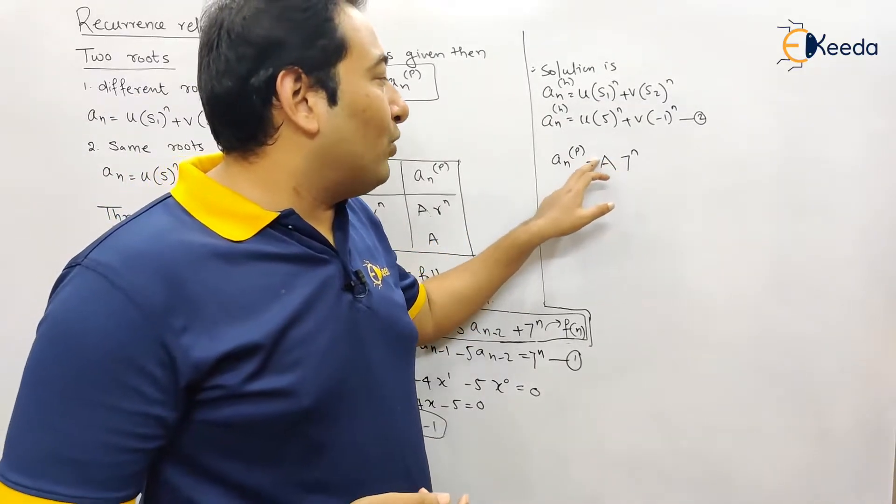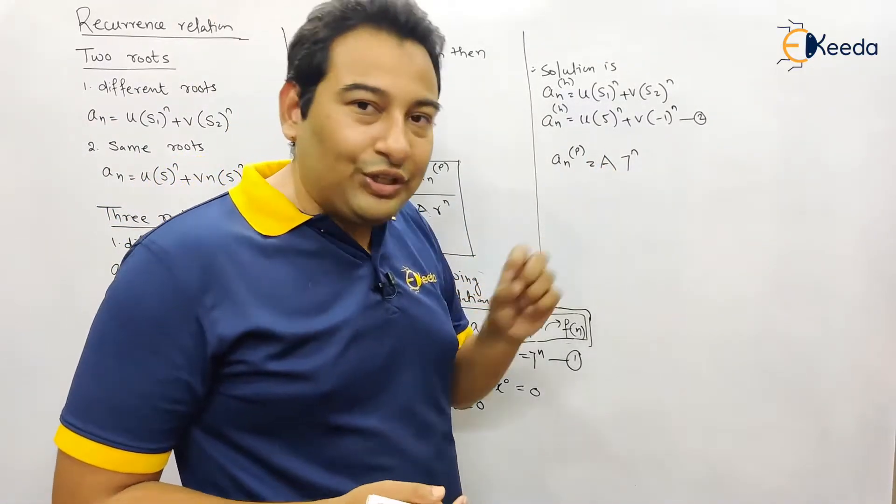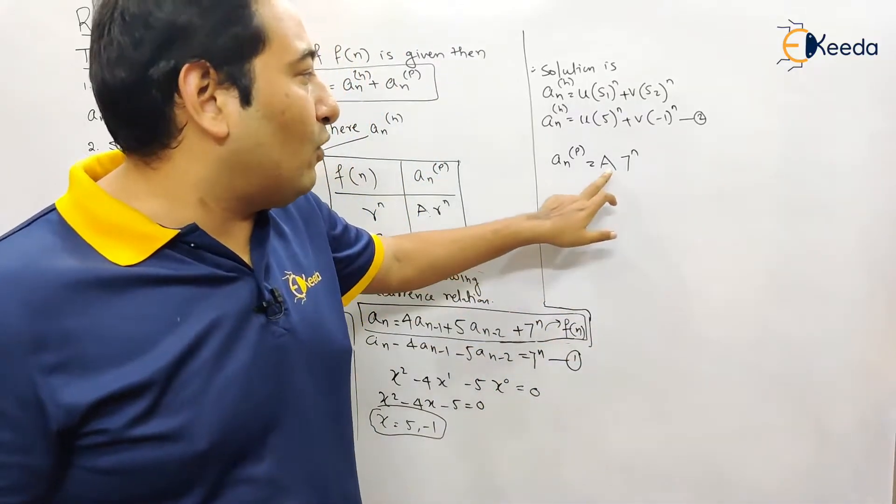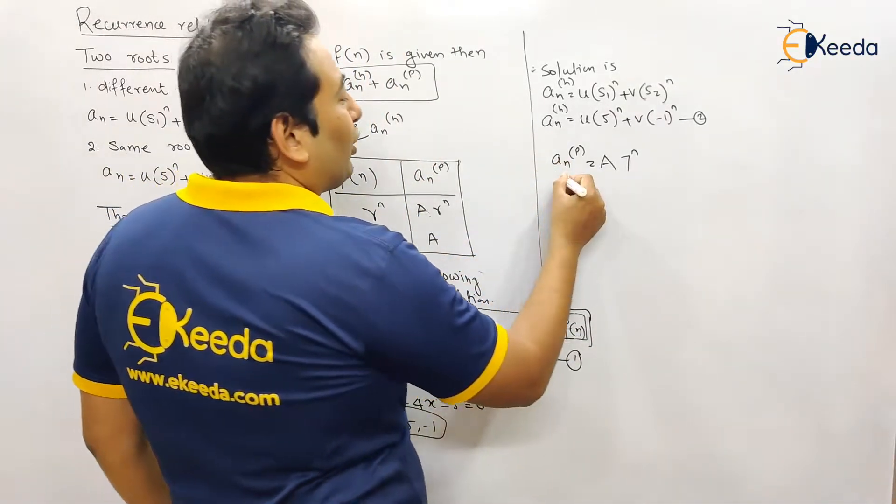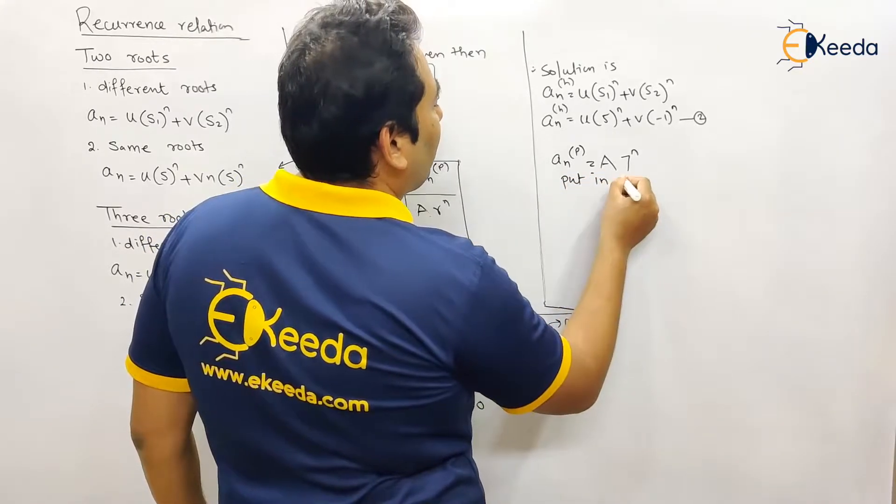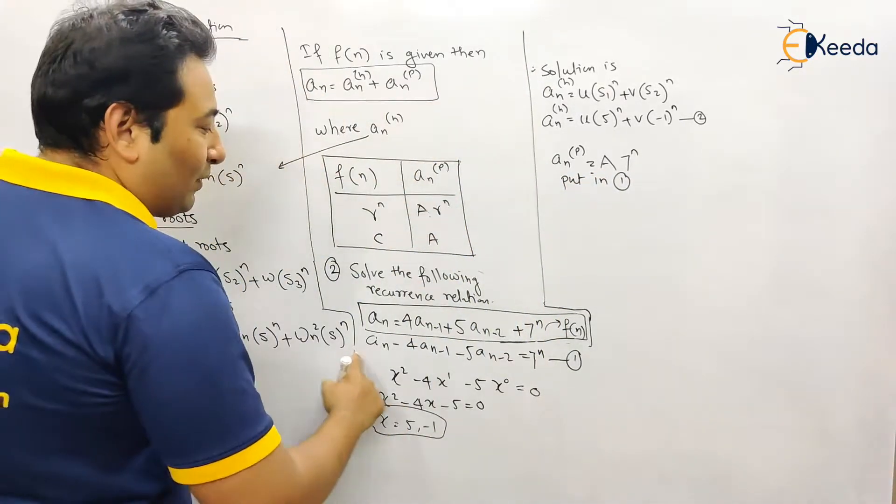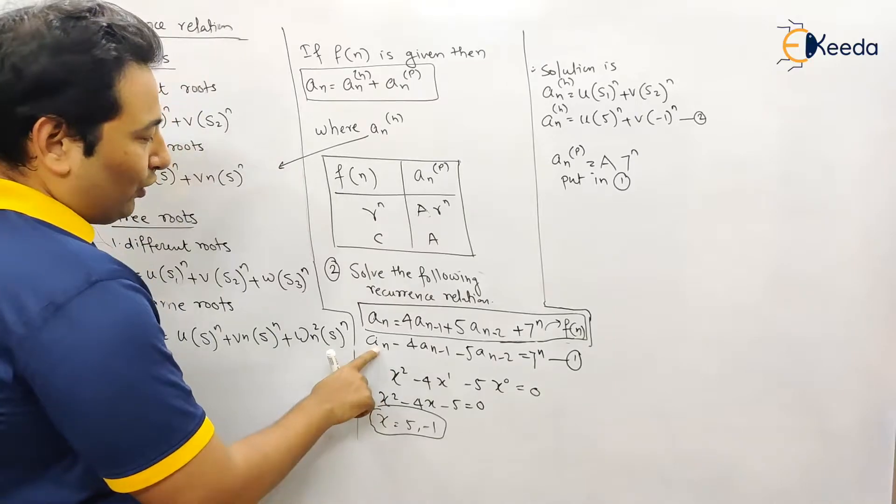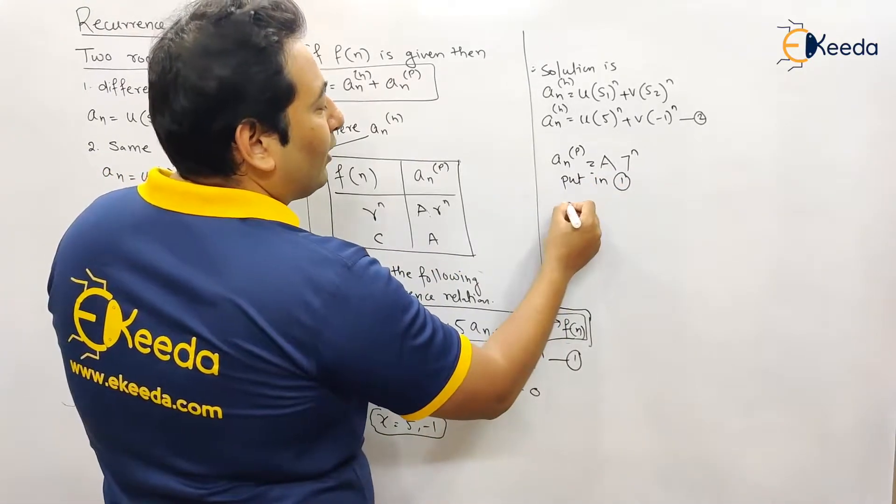In a_np I want to get the value of a. So see the procedure. What we will do to get the value of a - we are going to put in equation number one. See the procedure. We are going to substitute in equation number one. So in place of a_n we are going to put a·seven raised to n.